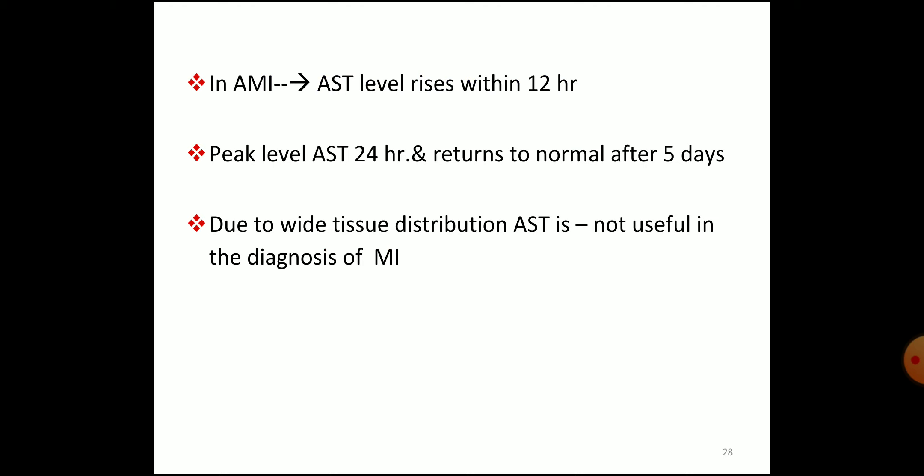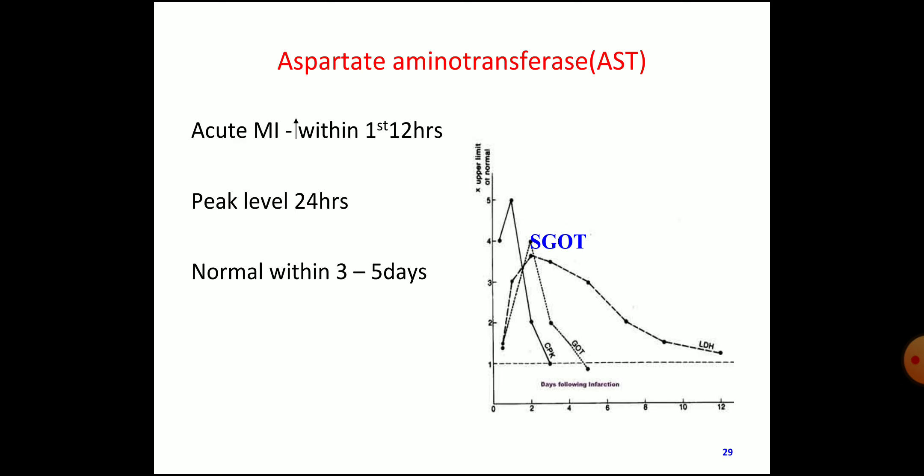In acute myocardial infarction, AST level rises within 12 hours — not immediately, only after 12 hours. Peak level of AST is at 24 hours, and it returns to normal after 5 days. It is not of much importance nowadays because we are using CKMB and cardiac troponin for immediate diagnosis. Due to its wide tissue distribution, AST is not useful in specifically diagnosing myocardial infarction — it is produced from various tissues including liver. In this graph, increase is seen within the first 12 hours, peak at 24 hours, returning to normal by 3 to 5 days.